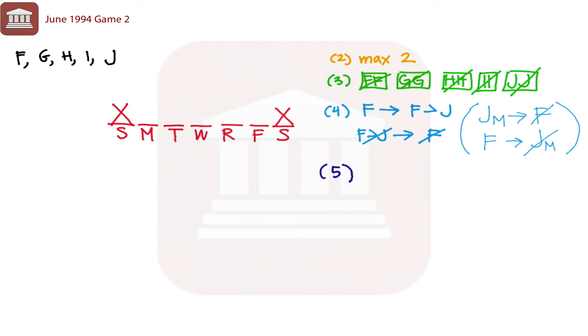All right, and then rule number five, if H works, then G must work on the following day. So if H, G block does not exist, then H does not work. So that means H can't be on Friday, because if H were on Friday, there would be no place for the H, G block.